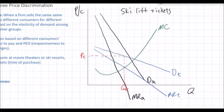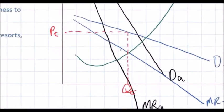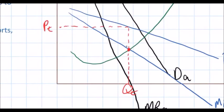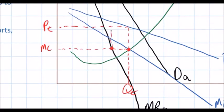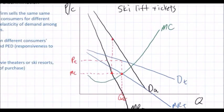The ski resort could charge two prices: one price for teenagers who are more price sensitive and have generally less demand for lift tickets due to lower disposable incomes, and a higher price for adults. To determine the adult price, we note that at quantity QT the firm's marginal cost is found by going up to the marginal cost curve. Then going over to the marginal revenue curve for adults, we can find a higher price PA by going up to the adults' demand curve.